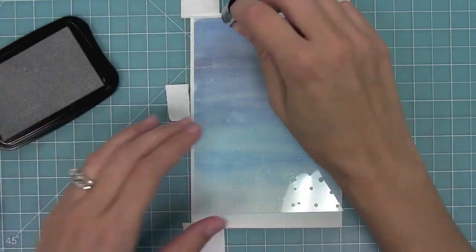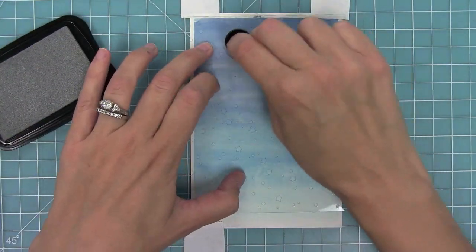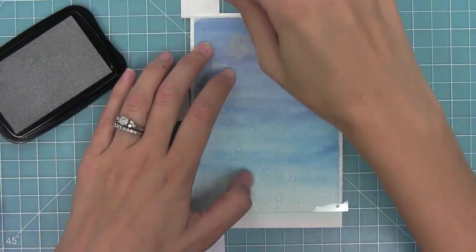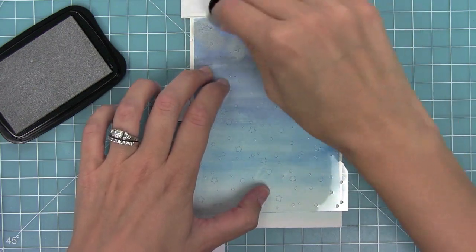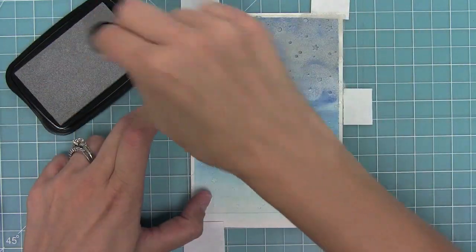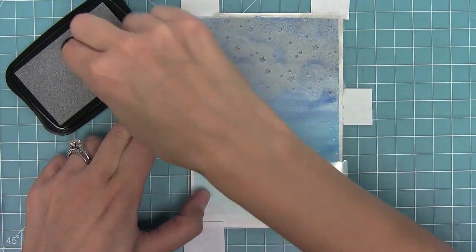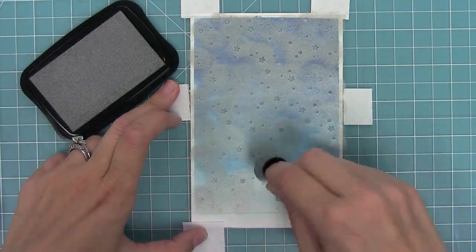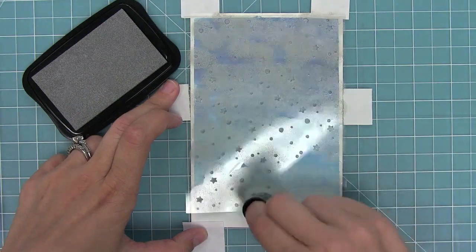This is some silver delicata ink - any silver ink would do - and a little foam dauber. I'm pushing it into the ink and then pouncing it onto the stencil. I'm not rubbing it across but I'm pouncing it across all of those little openings, and I'll cover the entire piece with that silver ink.